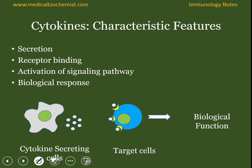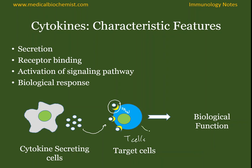Let's say the macrophage has secreted cytokines that are specific to T cells. These cytokines would travel and bind to the T cells via their specific receptor. Once it binds to the specific receptor, it will induce signal transduction leading to its biological function. This biological function can be either cell-mediated cytotoxicity or it can be helping antibody production.